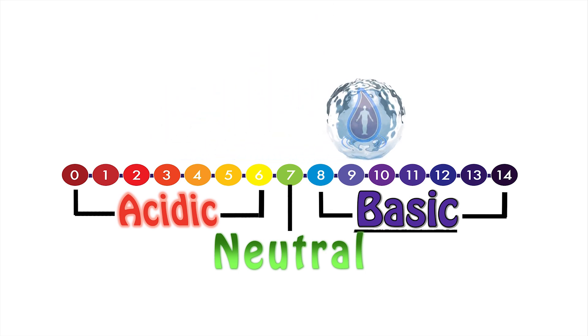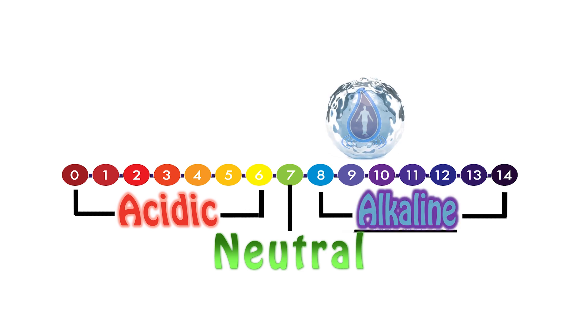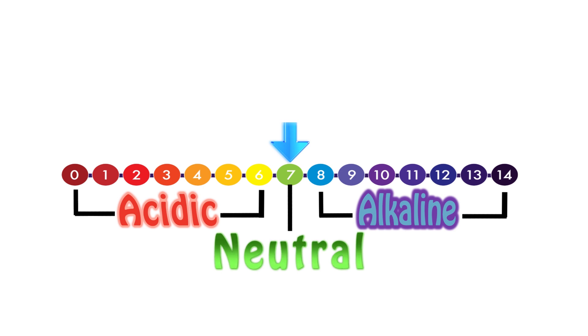The word basic is synonymous with the word alkaline, so we will use these words interchangeably. The pH scale reads from 0 to 14. The middle number in green is 7, which represents neutral or balanced. 7 is neither acidic nor alkaline. Anything lower than 7 is acidic. Anything higher than 7 is alkaline.